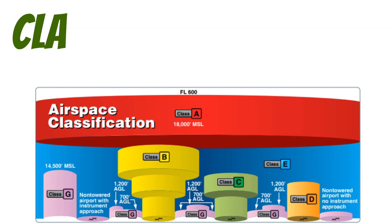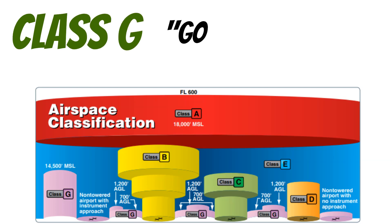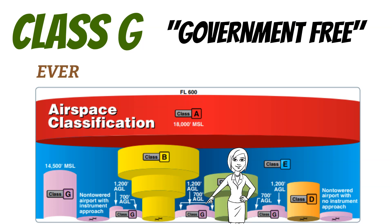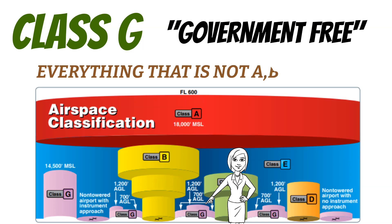The last type of airspace we're going to look at today is Class Golf. As already mentioned, G is for government-free because this is uncontrolled airspace. Also remember, G is for ground because typically you see Class Golf up against the surface. Basically, Class Golf is everything that's not Alpha, Bravo, Charlie, Delta, or Echo, and it's the least restrictive of all the airspace classes.